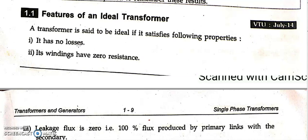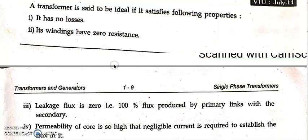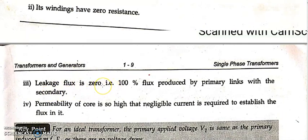No losses means there are no iron losses, no copper losses, no winding losses — total losses are equal to zero. We know there is no such machine in the world with no losses. The windings have zero resistance, so there will be no loss. Also, leakage flux is zero, meaning whatever flux is produced in the primary part is completely, 100%, transferred to the secondary side.